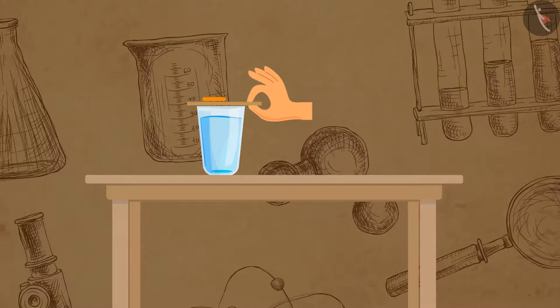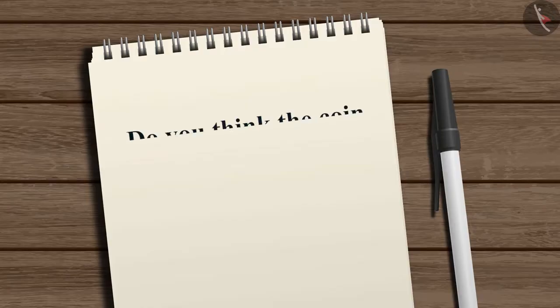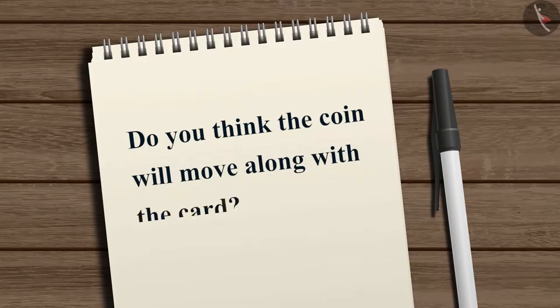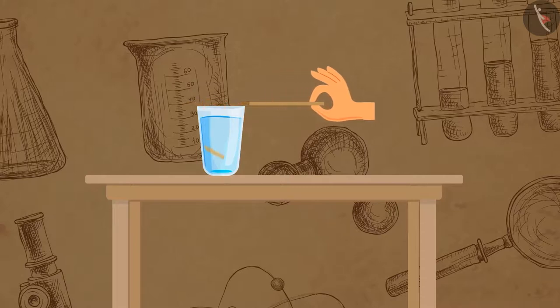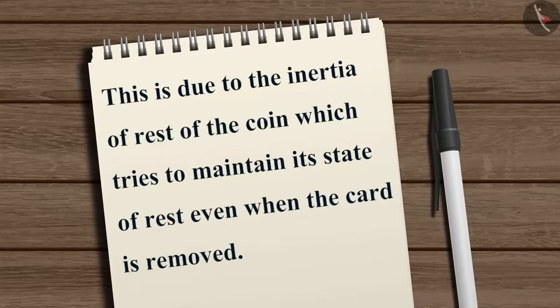Pull out the card as quickly as possible. Do you think the coin will move along with the card? Well, that might happen if you move the card slowly. But if you pull the card really fast, the coin above it will fall vertically downward in the glass instead of moving along with it. This is due to the inertia of rest of the coin which tries to maintain its state of rest even when the card is removed.